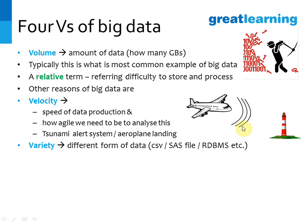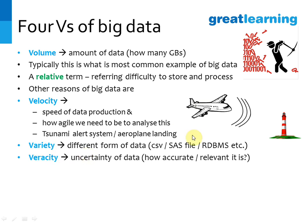Then comes variety — data can come from CSV files, SAS files, RDBMS, and within RDBMS you can have many variants like Oracle and others. The final V is veracity, which is about the uncertainty of the data: how accurate and how relevant this data is. These are the four dimensions, the four complexities that define big data.